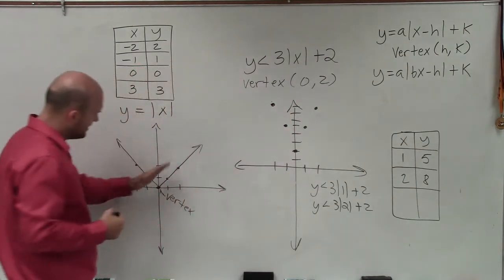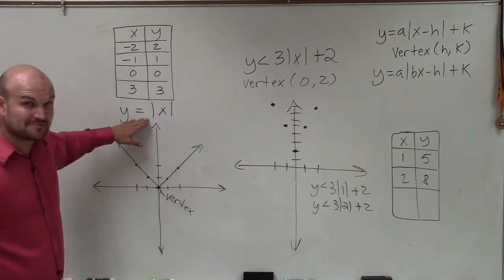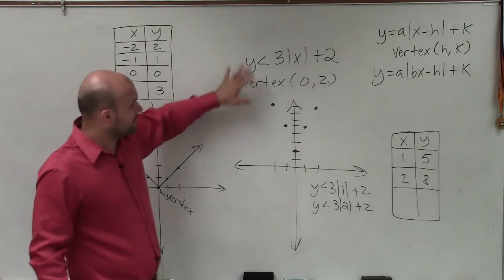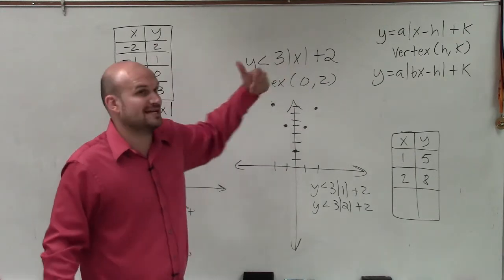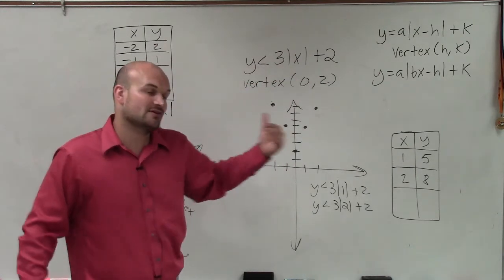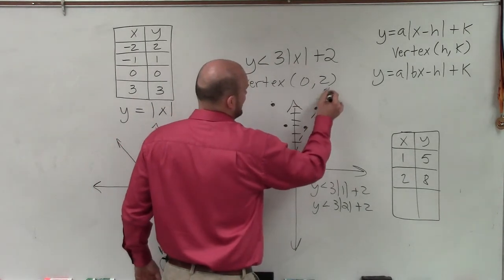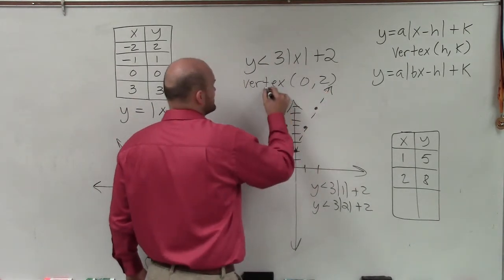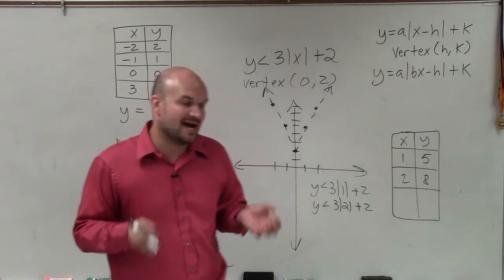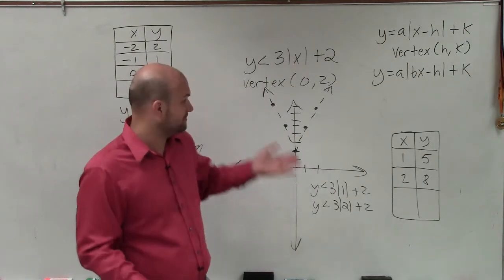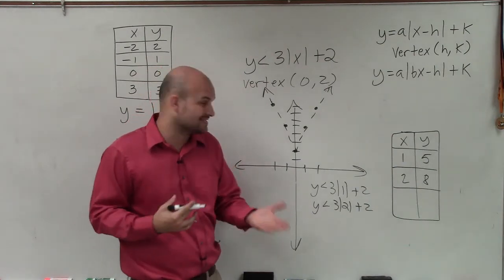Now, before I actually draw the line, this is the parent graph of an absolute value equation. Before I graph the line, I want to determine, is my line going to be dashed or solid? And since my inequality is y is less than, not less than or equal to, my graph is going to be an absolute value that has dashed lines. Because any point that lies on the line is not going to be a part of the solution. And you can always test that to determine that.